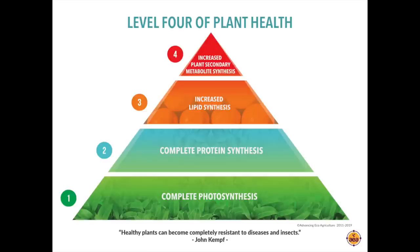These are compounds that plants produce as protectants against ultraviolet radiation, insect attack, and disease attack, using active immune pathways such as the ISR pathway and the SAR pathway. Over the next 15 minutes I'll describe what we observe at each of these four levels physiologically, how that contributes to disease and insect resistance, what we can do as farmers and agronomists to facilitate the transition from one level to the next, and the specific groups of diseases and insects that plants become resistant to at each stage.